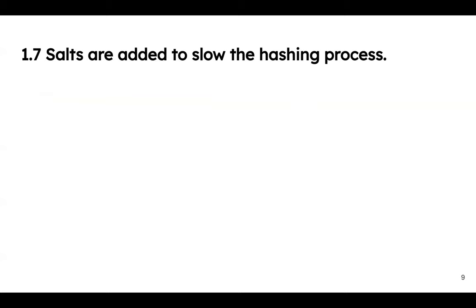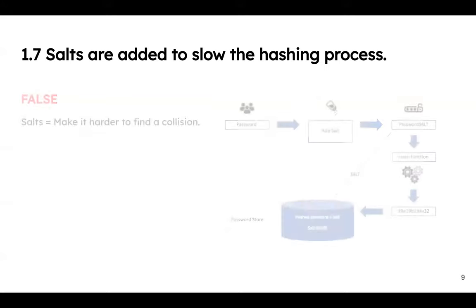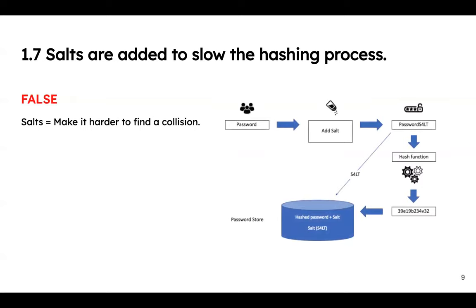Salts are added to slow down the hashing process — false. All a salt is, is some random gibberish that gets tossed in with your plain text password before it goes into the hash function. The salt gets mixed up with the hash to make it harder to find a collision. Remember: the salt is added before the hash function, not after.